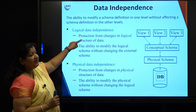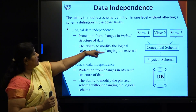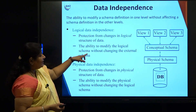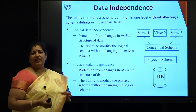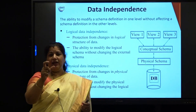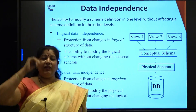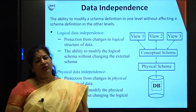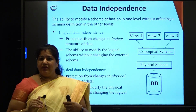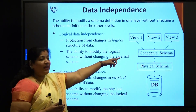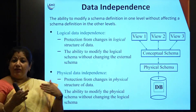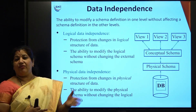Logical data independence is the protection from changes in the logical structure of the data. It is the ability to modify the logical schema without changing the external schema. For example, if the CGPA scale is changed from 5 to 10, that will not affect the way users access the data. Or if an additional field like fee due is added, changes to the conceptual schema need not require changes to user queries — the user will not be affected.